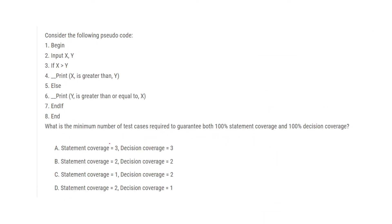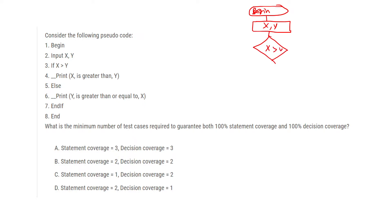Next, a similar question. Whenever pseudo code is given, try to draw the flowchart. Here: begin, input x, y — if x is greater than y, otherwise y is greater than x. Draw the flowchart accordingly.